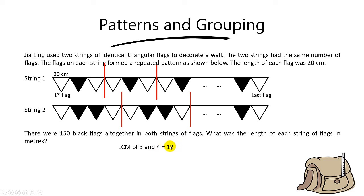And so now, the next question is: in 12 flags for string 1, how many black flags will you have? To find the answer, you simply take 12 divide by 3, you get 4 black flags.